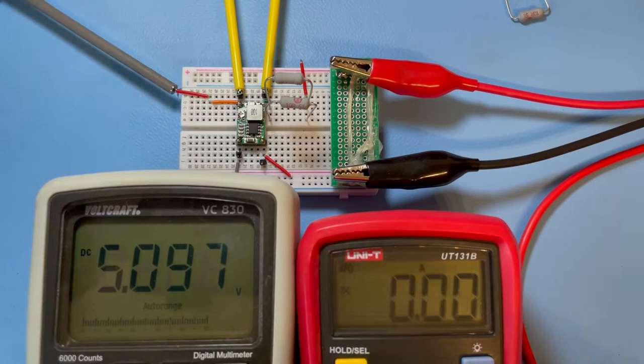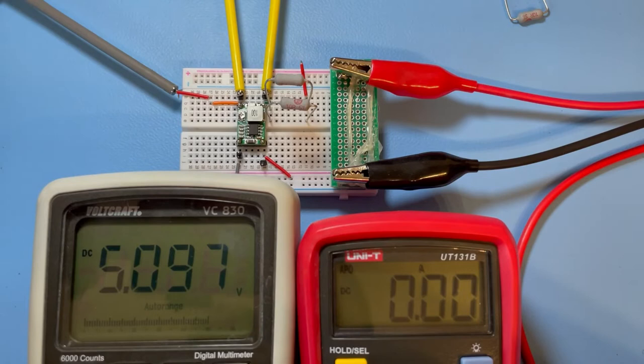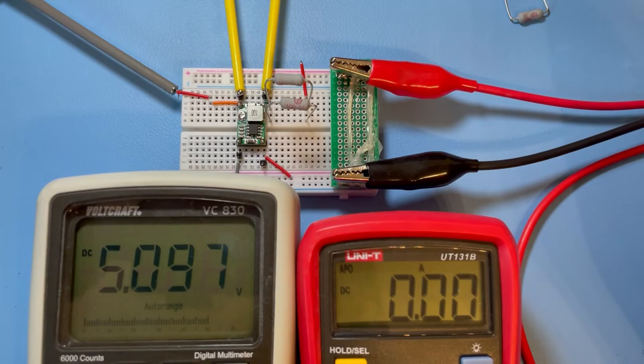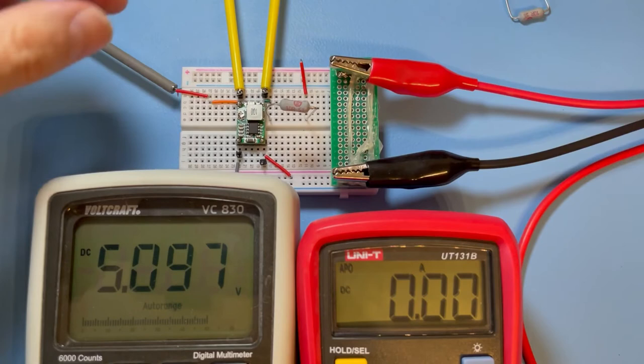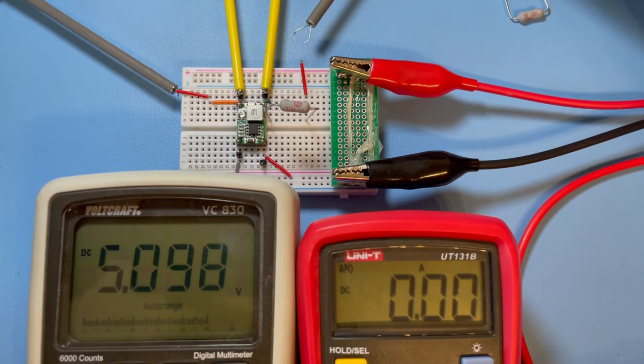Okay, so that's quite interesting. Up to around 500 milliampere we can supply, but then with one ampere we break down, so somewhere in between we break down here. So let's see again how the 10 ohms behave. Yeah, very stable.